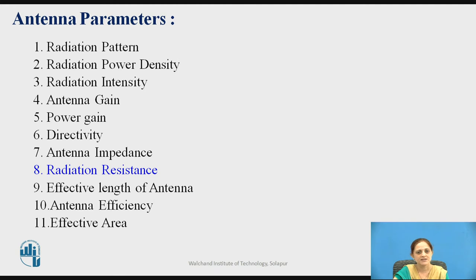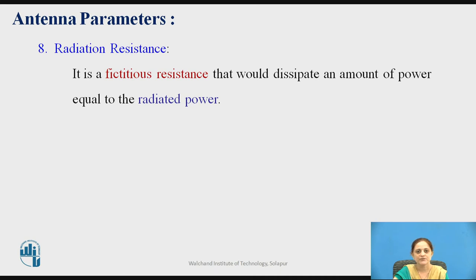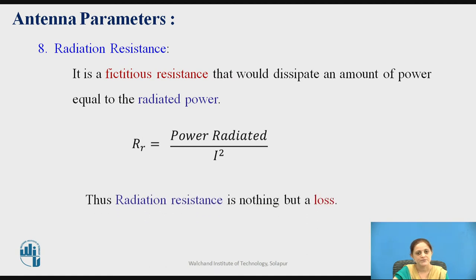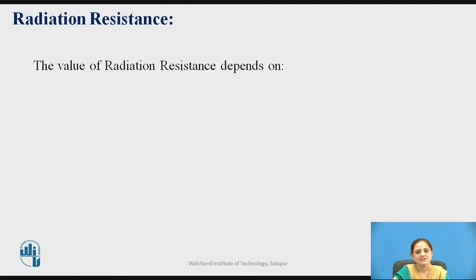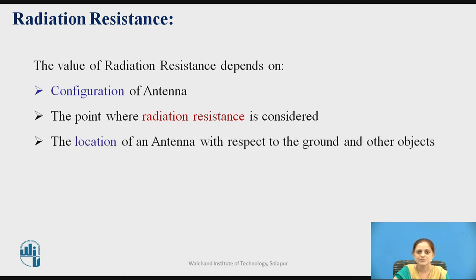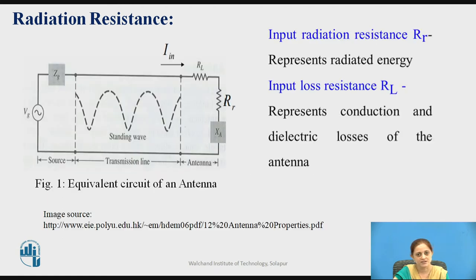The next parameter is radiation resistance. Radiation resistance is a fictitious resistance that would dissipate an amount of power equal to the radiated power. Mathematically it is represented as the ratio of power radiated to I squared. The value of radiation resistance depends on: the configuration of the antenna, the point where radiation resistance is considered, the location of the antenna with respect to ground and other objects, and the ratio of length to diameter of the conductor used.